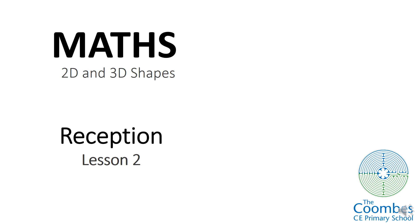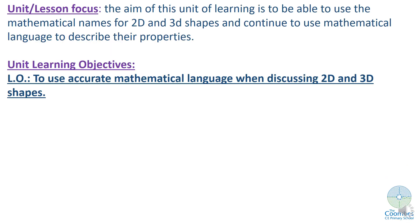Hello apples and cherries and welcome back to day two of your 2D and 3D shape lessons. Just to recap, for the next two weeks the aim is for us to look at 2D and 3D shapes and to work out the mathematical language used to describe them. So we're going to be using very grown-up language, and by the end of it, we will be able to use accurate mathematical language when describing 2D and 3D shapes.